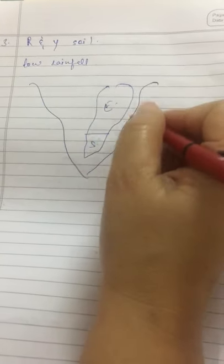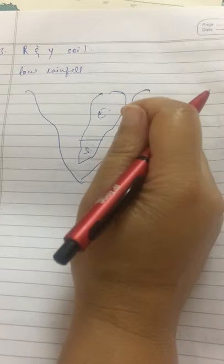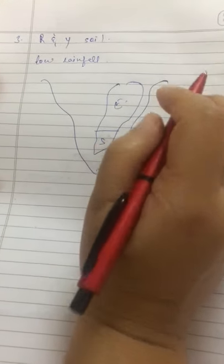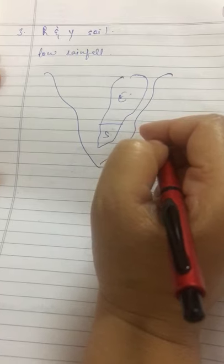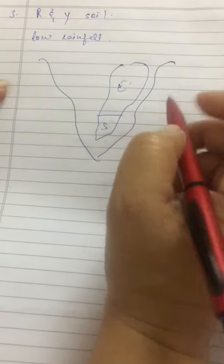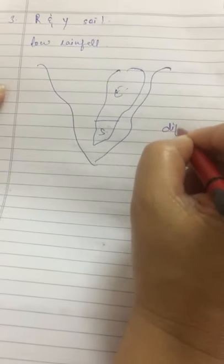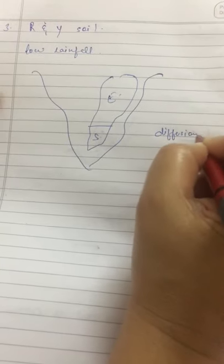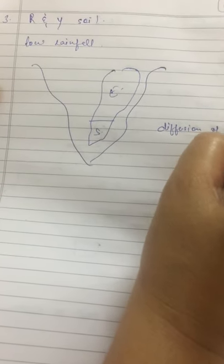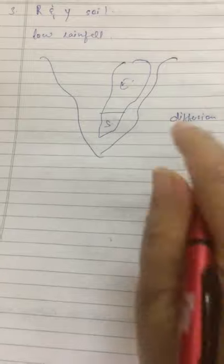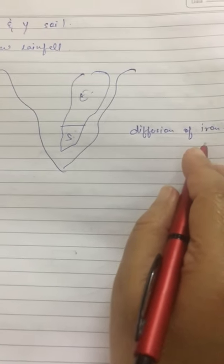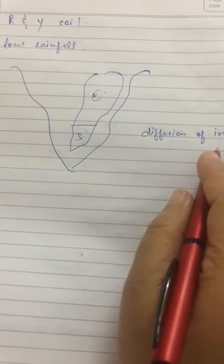Red soils develop on crystalline igneous rocks and the colour of soil is red due to the diffusion of iron in crystalline and metamorphic rocks. It looks yellow in hydrated form.